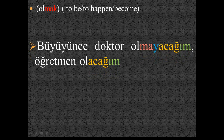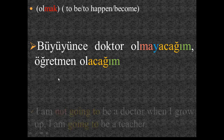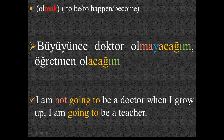'Olmak' again — a good example showing both affirmative and negative forms: 'Büyüyünce doktor olmayacağım, öğretmen olacağım' — when I grow up, I am not going to be a doctor; I am going to be a teacher. 'Büyüyünce' = when I grow up, 'doktor olmayacağım' = not going to be a doctor, 'öğretmen olacağım' = going to be a teacher.